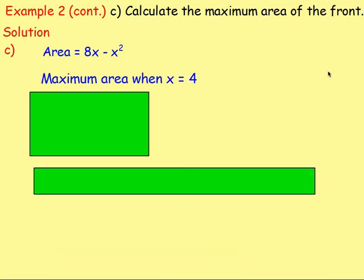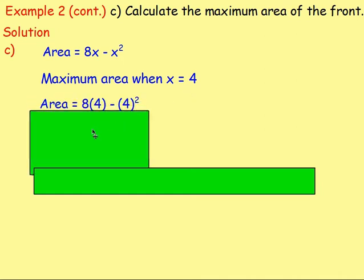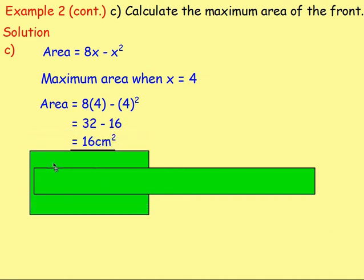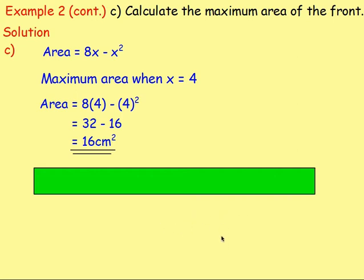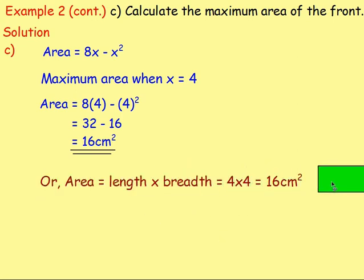For part c, calculate the maximum area. Substituting x = 4 into A = 8x minus x²: 8 times 4 minus 4² = 32 minus 16 = 16 square centimetres. Alternatively, since both dimensions are 4, you could just compute 4 times 4. Both approaches give 16 square centimetres.